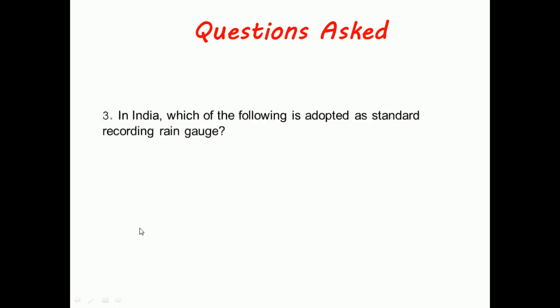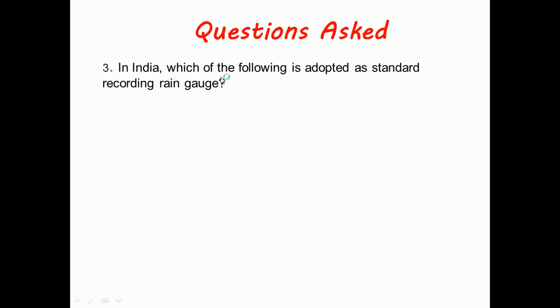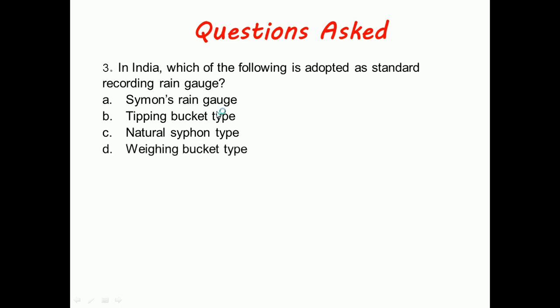The next question is: In India, which of the following is adopted as standard recording rain gauge? Options are Simon's rain gauge, tipping bucket type, natural siphon type, or weighing bucket type.